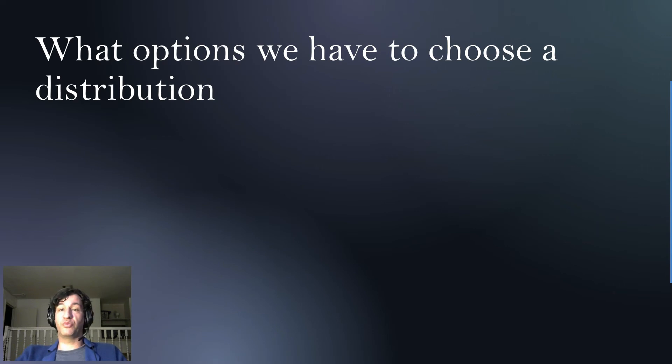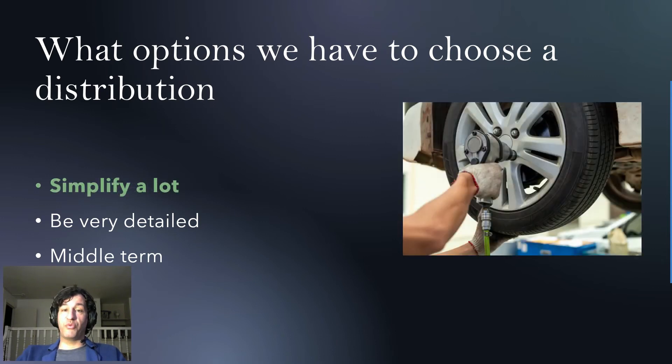So what options do we have when it comes to choosing a distribution? You can simplify a lot, you can be very detailed, or you can be on the middle term. Let's talk about simplifying a lot. We simplify a lot when we don't have enough data. For example, if you want to know in a process how long does it take for a mechanic to change a tire, you don't have that data available in any system.